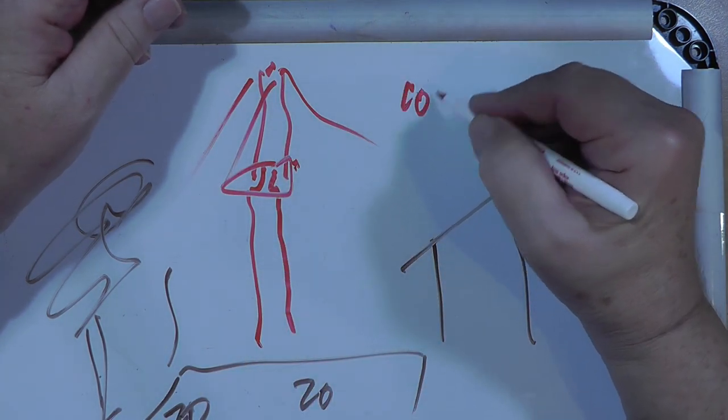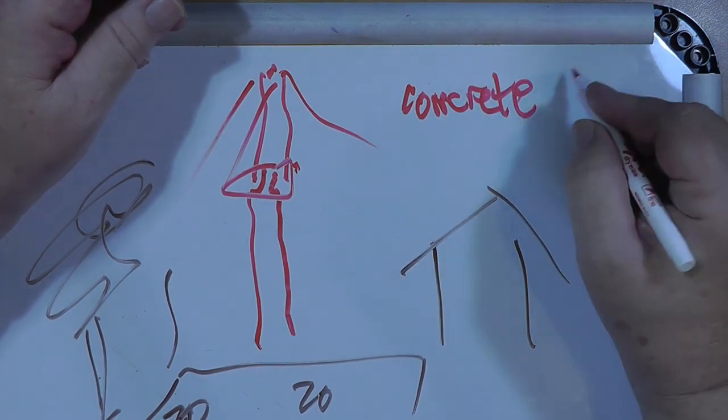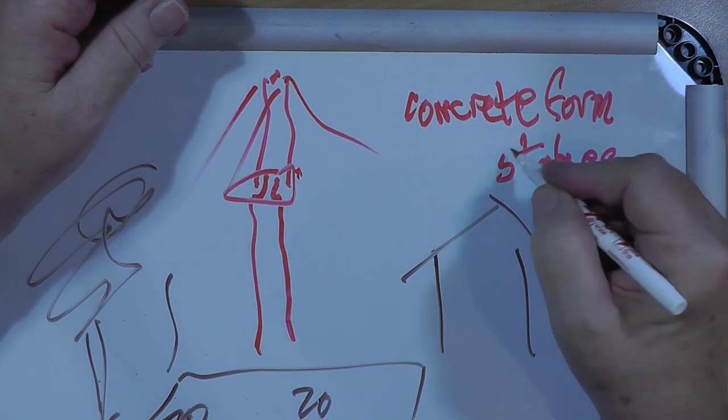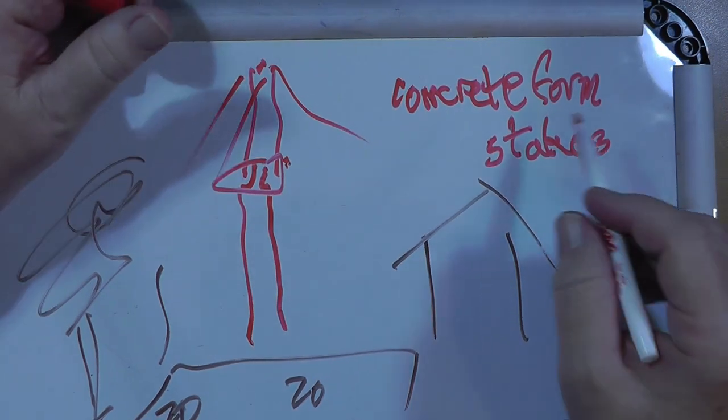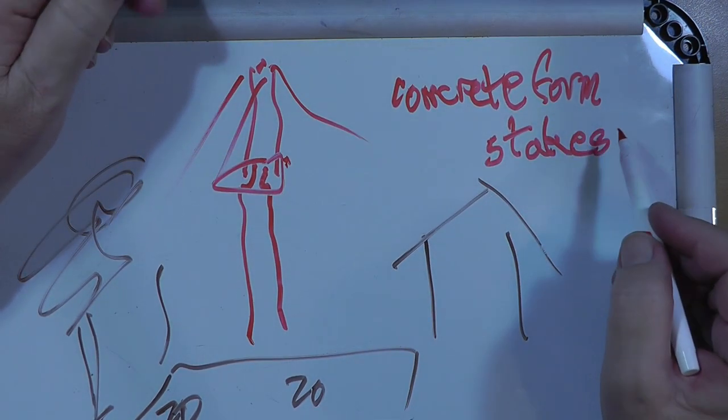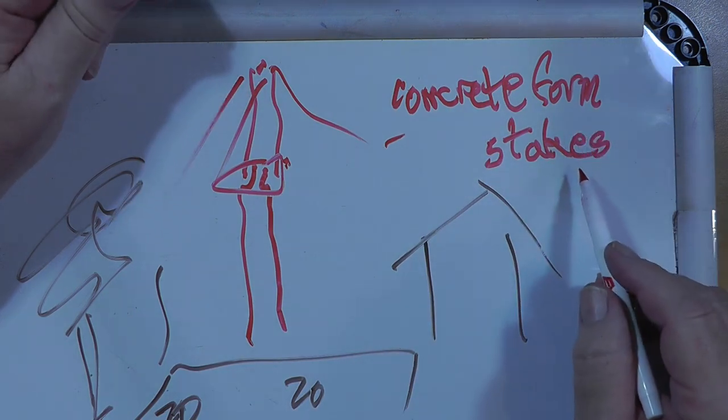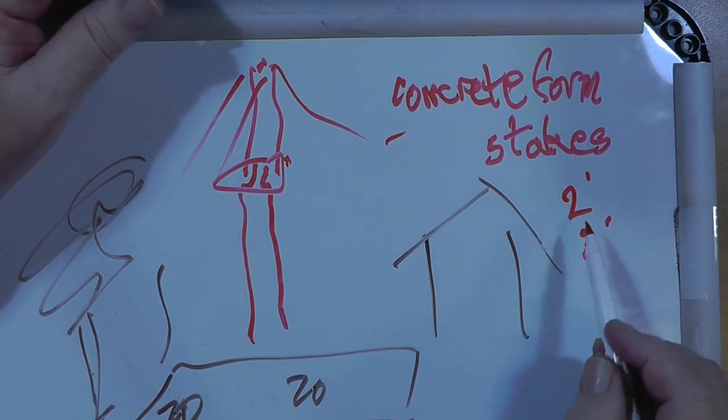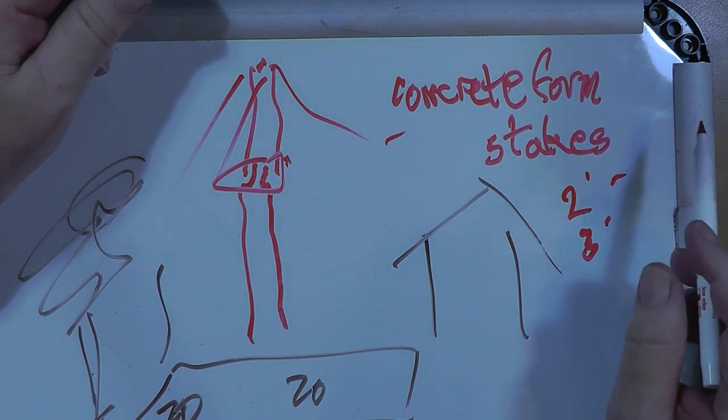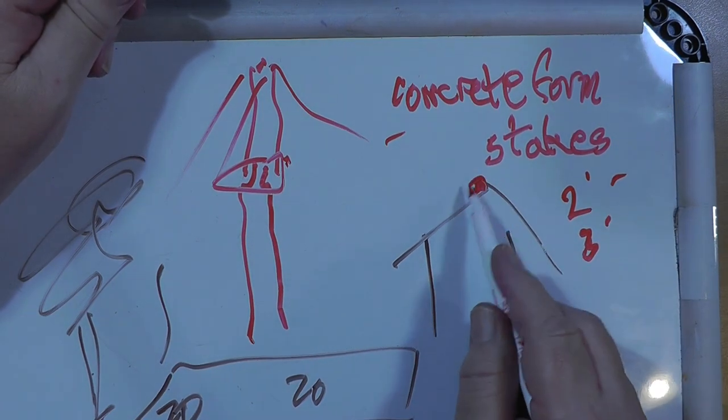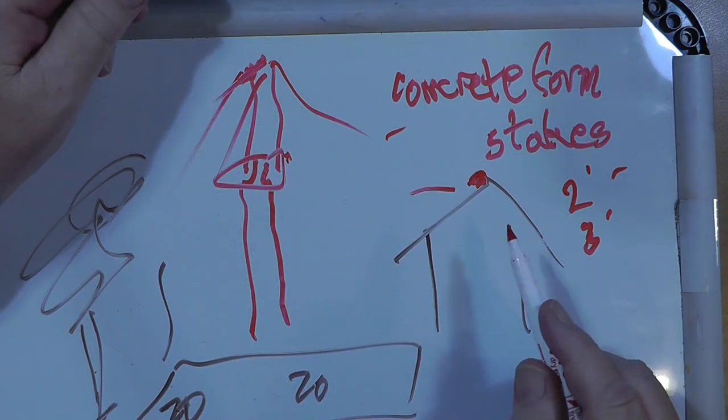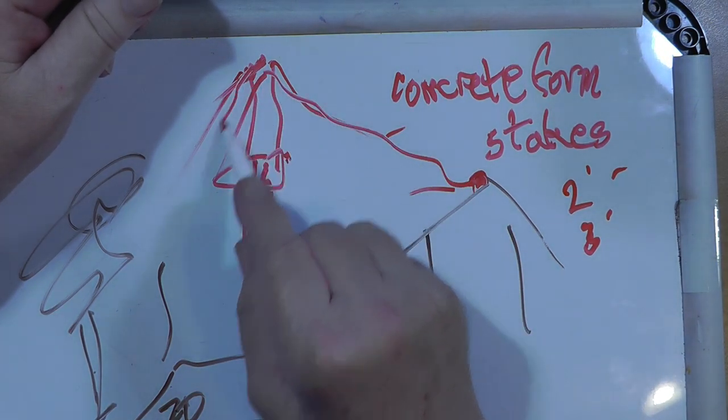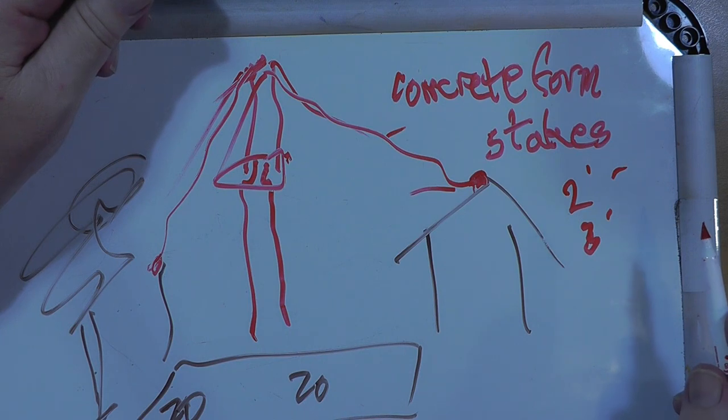You can buy what are called concrete form stakes. Not from your local restaurant, but from Home Depot or Lowe's. You can get them in one foot, two foot, and three foot lengths. For this, I think two foot is probably fine. And then you could run your antenna from this out to the back. It doesn't have to be perfect. You could go up here and then come down to the fence with an inverted V or something like that.